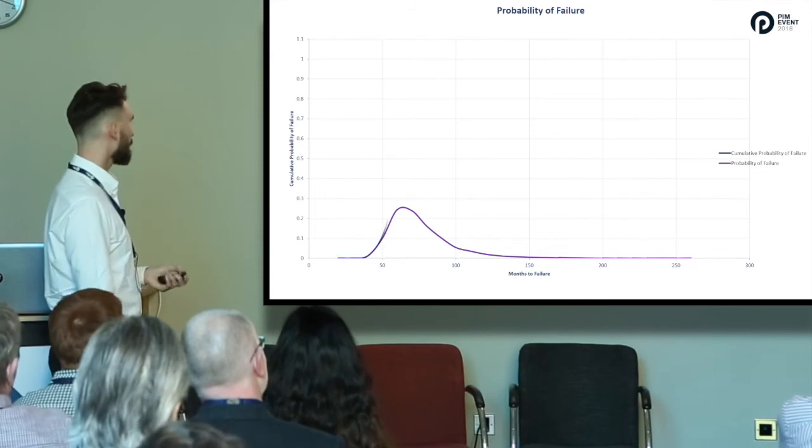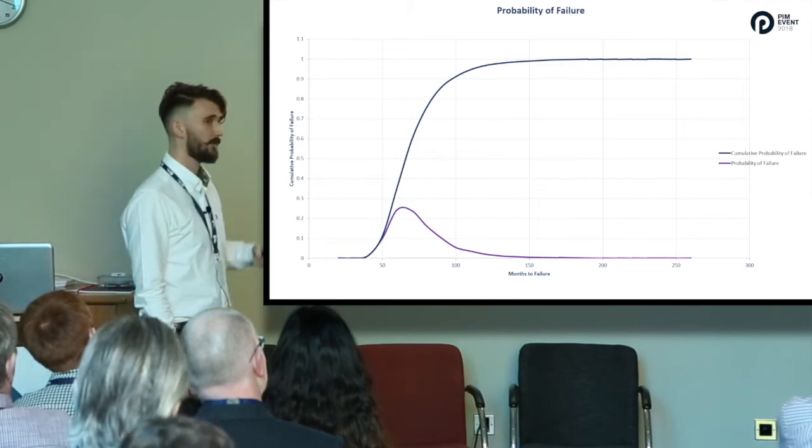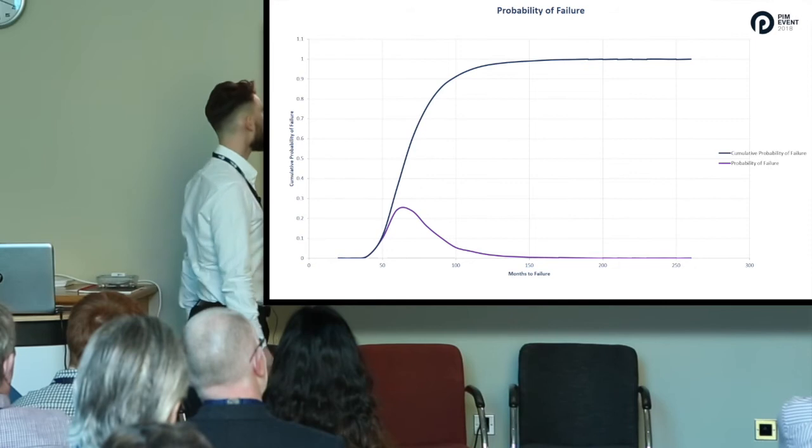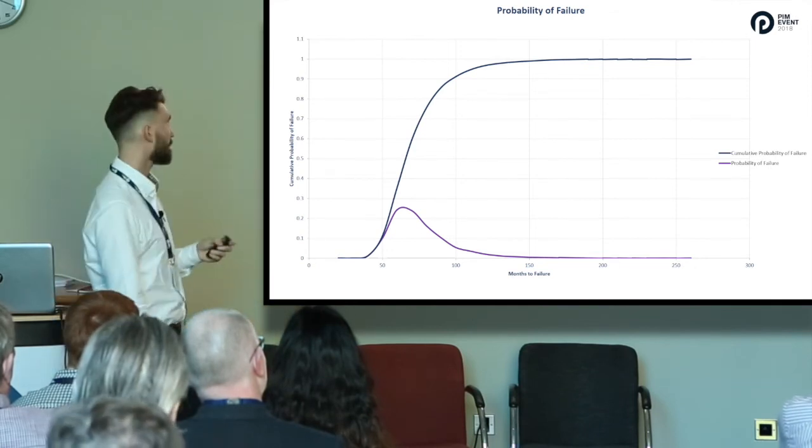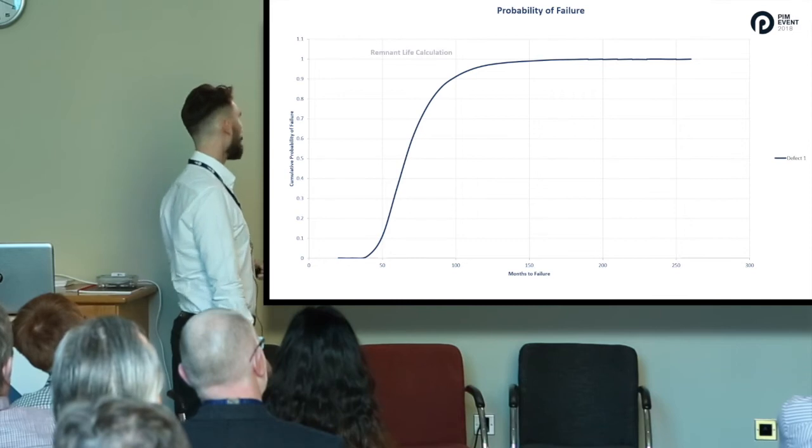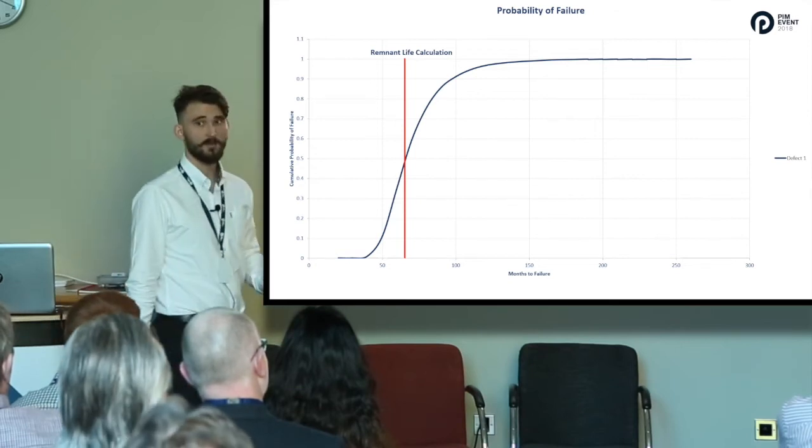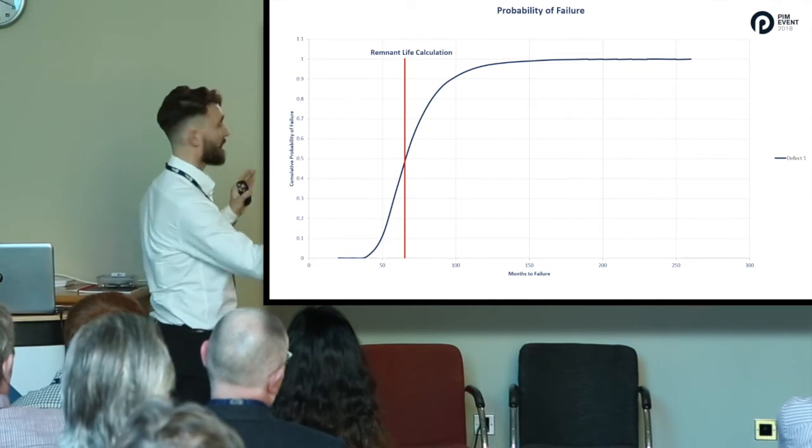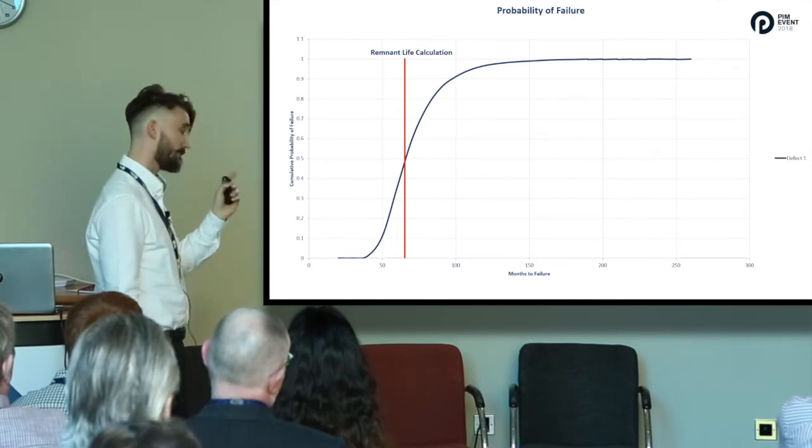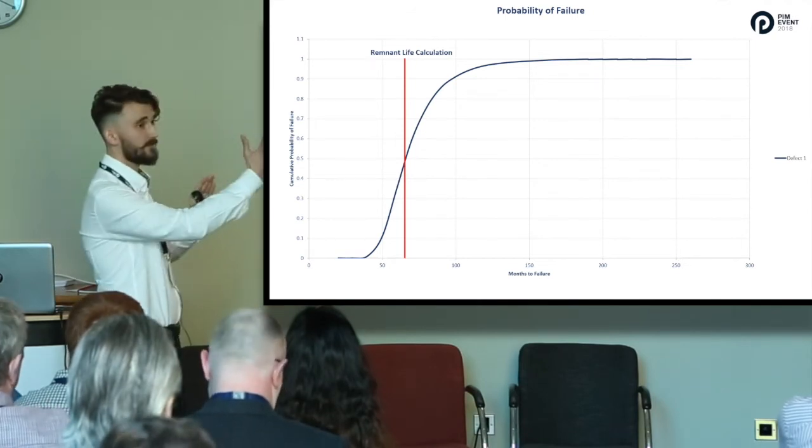So what we do is transform this into a cumulative probability graph. This shows how our probability accumulates over time. We start here at liftoff around about 25 months, and then we rise up to 100% probability of failure around about 150 months there. I'm going to plot my remnant life calculation on there as an example. Essentially what this remnant life calculation is, is an extremely accurate S-curve where we're 100% sure about all of our inputs being correct. Actually, the more uncertain I am about the calculation, the wider this S-curve gets.